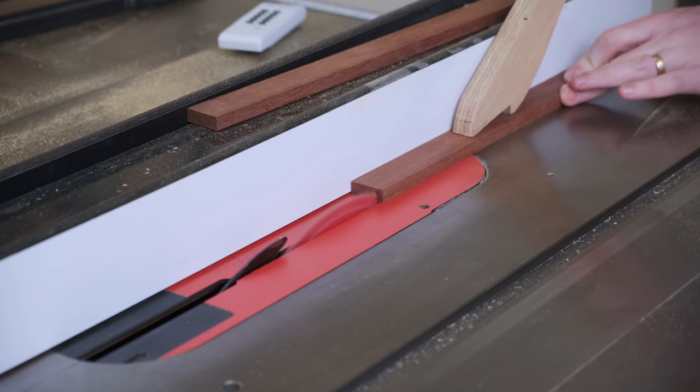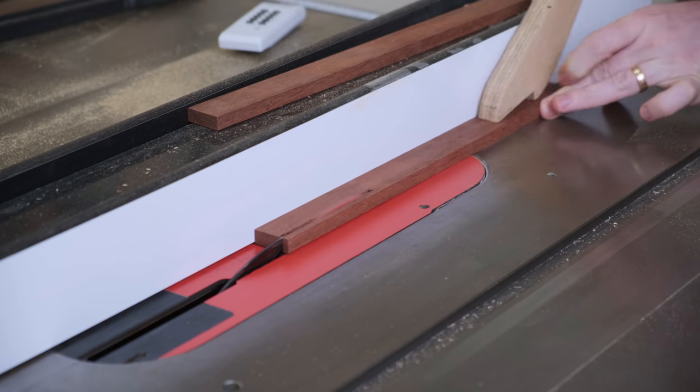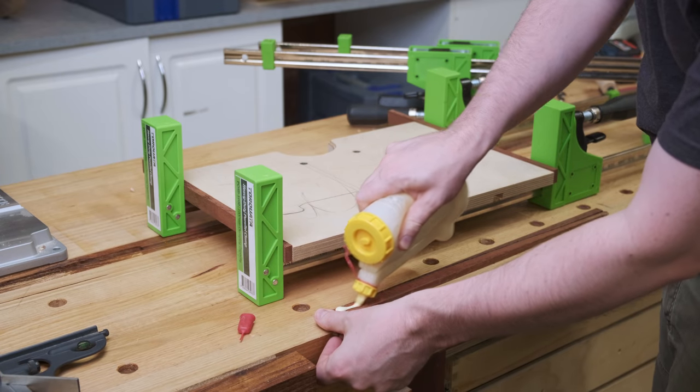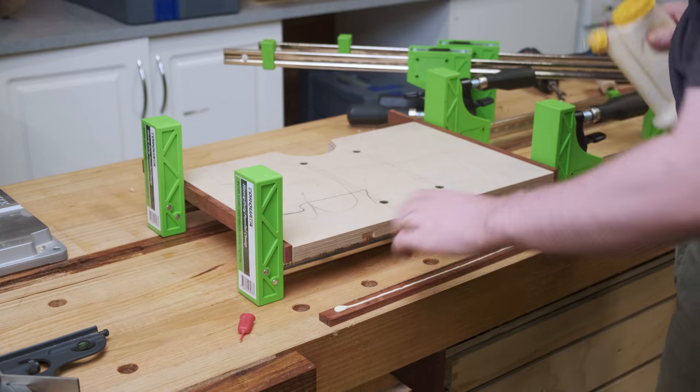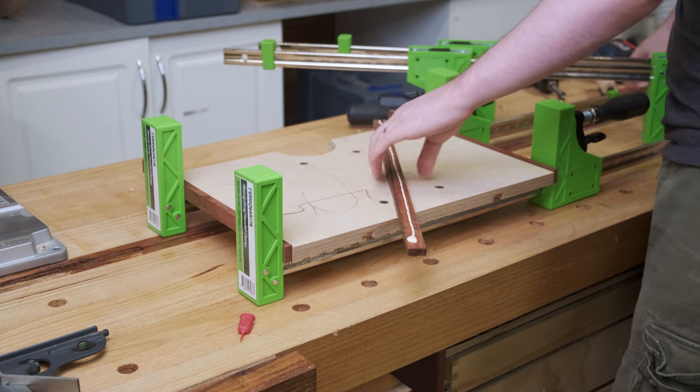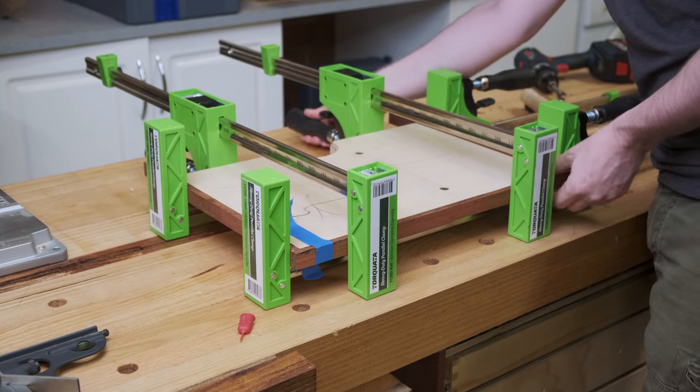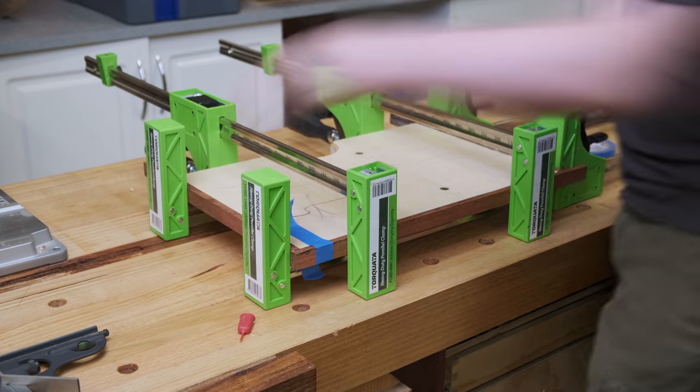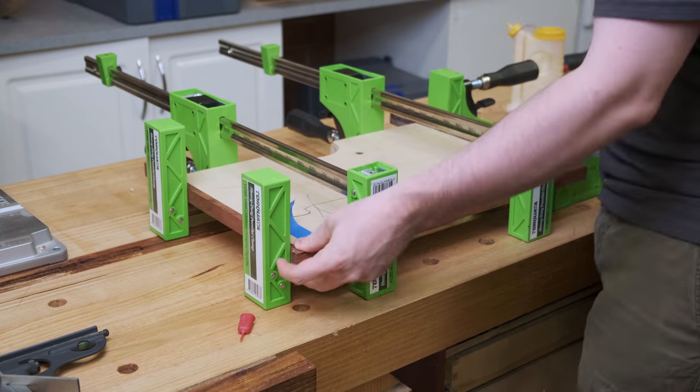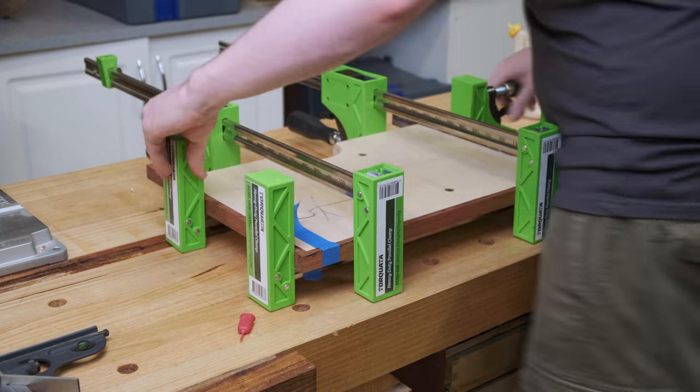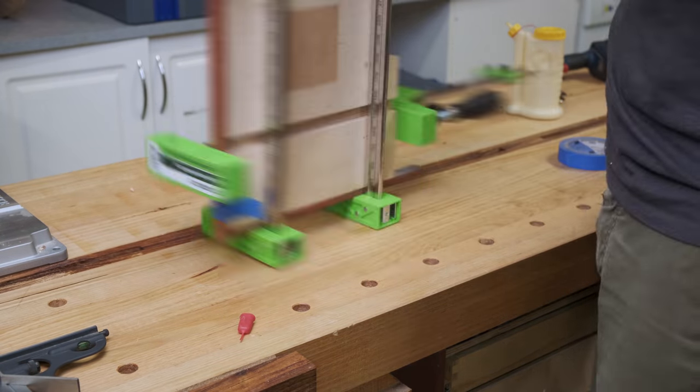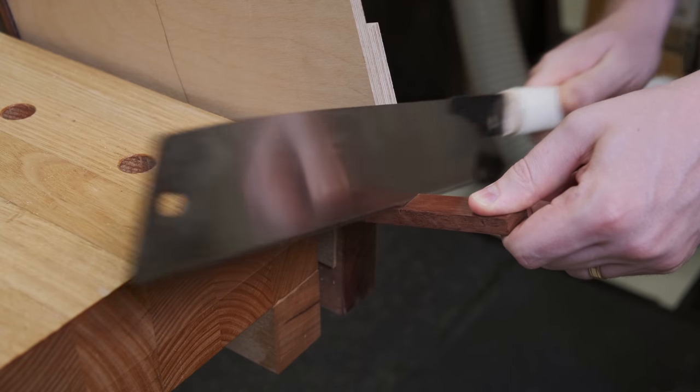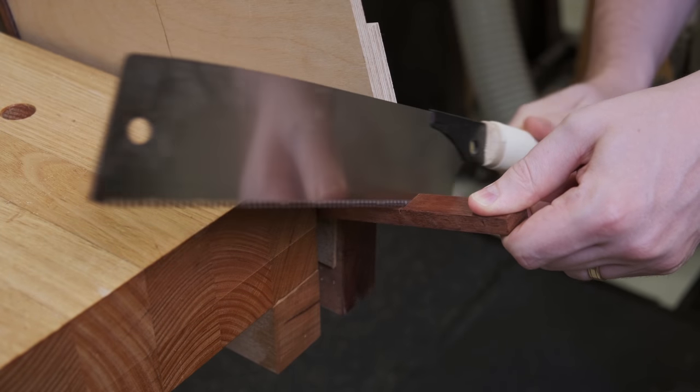You could call the drill press done at this point but where's the fancy? Some hardwood edging can be trimmed to width then glued on. Because the backside of it doesn't need edging, I didn't trim things to length before gluing, they are easy enough to trim off with a handsaw.